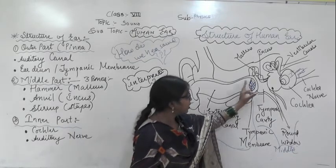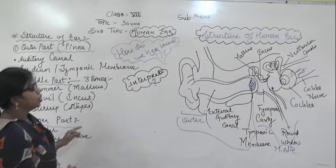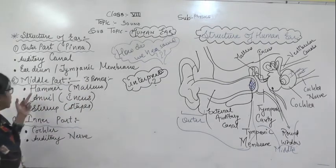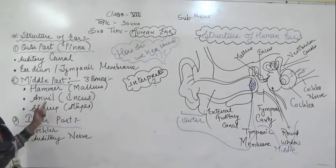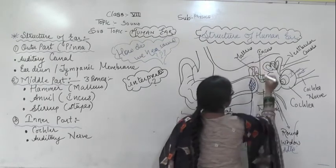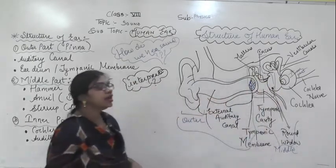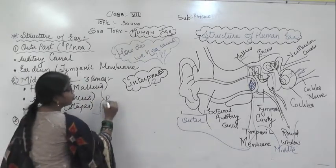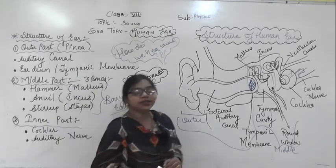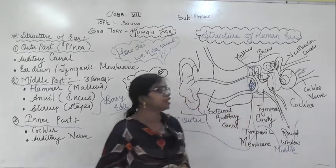After the outer part, it goes inside to the middle portion of the ear. Beyond the tympanic membrane it starts with the middle part. This middle part has three bones: the first is known as the hammer or malleus, the second is the anvil or incus, and the third is the stirrup or stapes. This portion is surrounded by bones and therefore it is known as the bony part of the ear.